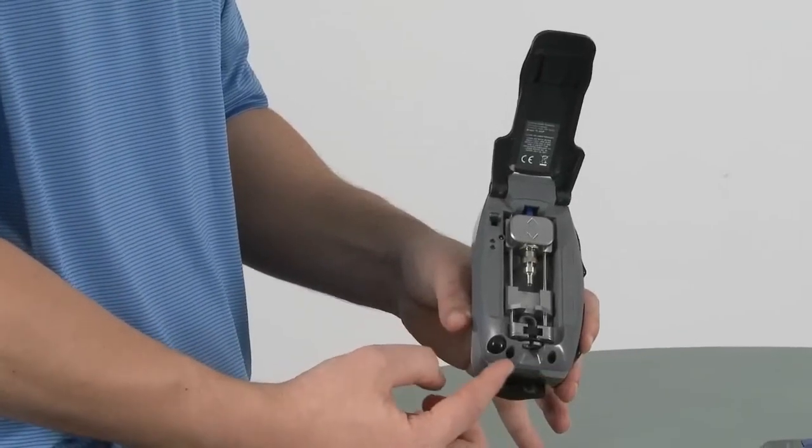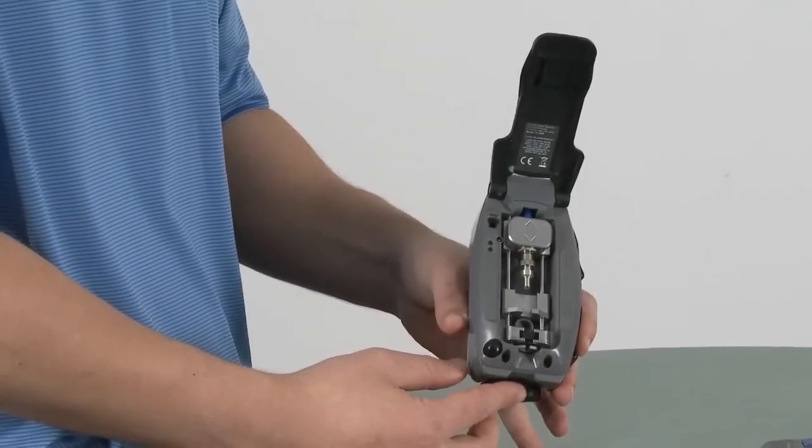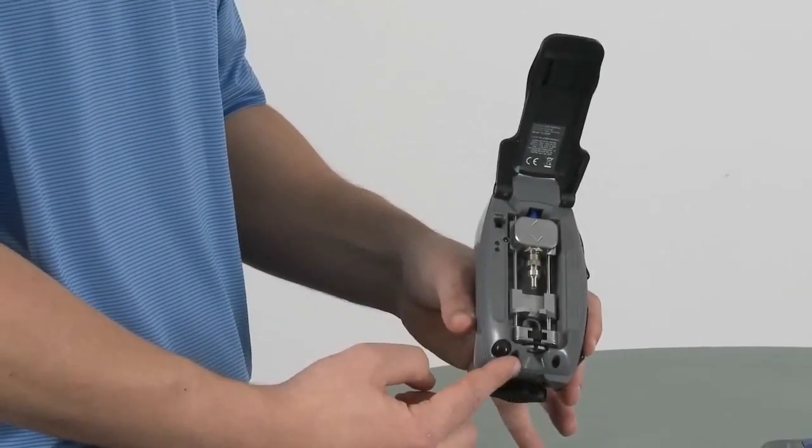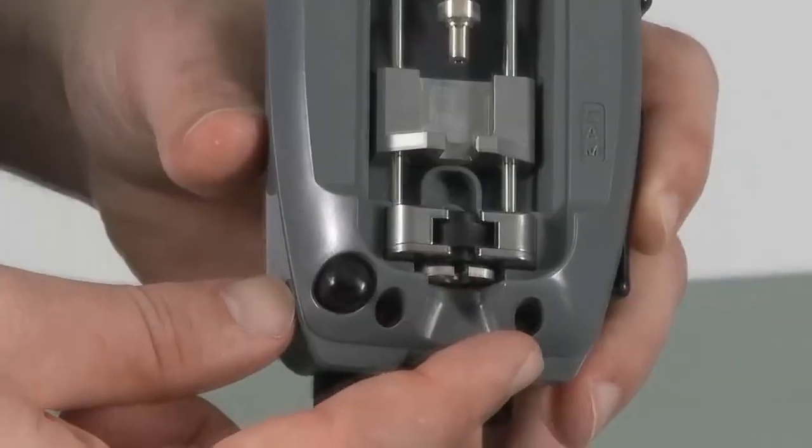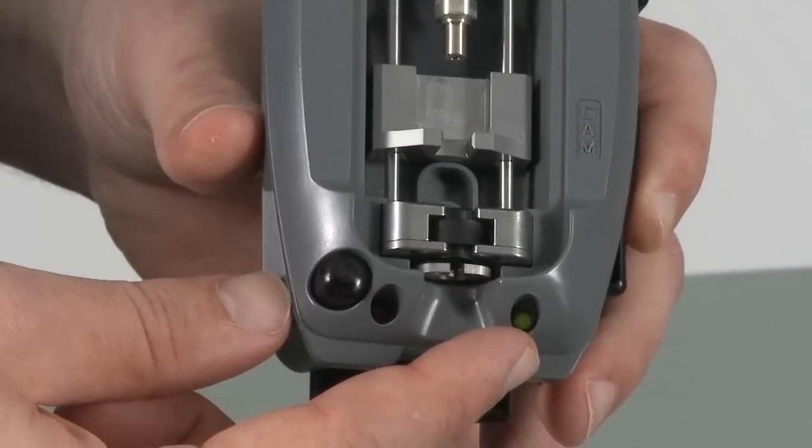These next two lights are your visual indicators of continuity after camming the connector. If the red light illuminates after pressing the cam button, you have not successfully mated the two fibers together. If the green light illuminates, then the device is reading light passing through your connector. This light is not giving you a decibel reading. It is merely affirming that yes, light is passing through the connector.